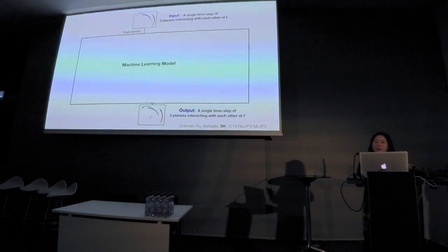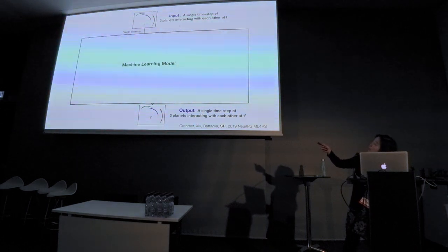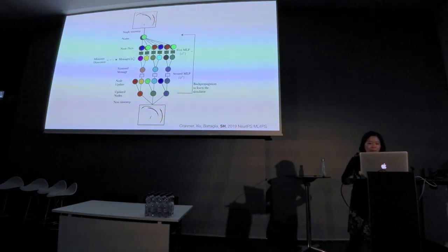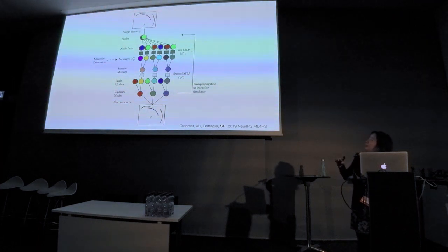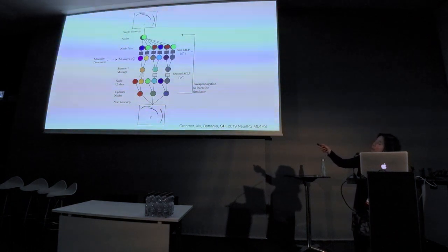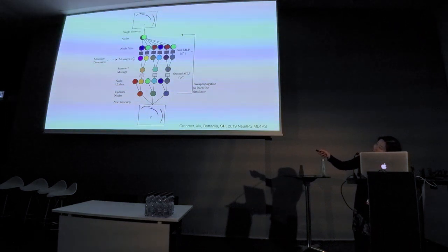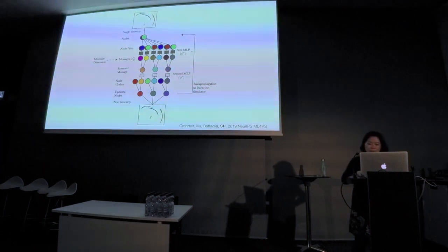Here's the model — it's very, very simple, and deliberately so, because we want the simplest network that finds the physical laws quickly. We have all the nodes with known attributes. We find all node pairs, use the first MLP to update all the different messages, sum the messages to the node, use a second MLP to update the node, then feed it back to learn the simulator.